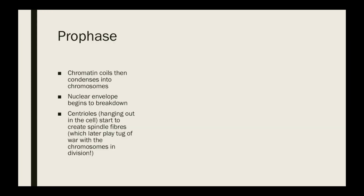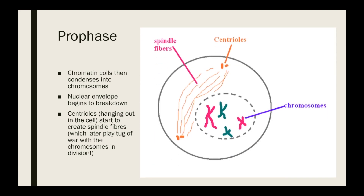Prophase: during this phase, the chromatin coils and then condenses into chromosomes. It's normally just hanging out within the nucleus, and at this point it starts to condense and coil. The nuclear envelope begins to break down, and the centrioles start to create spindle fibers, which later play tug-of-war with the chromosomes during division.